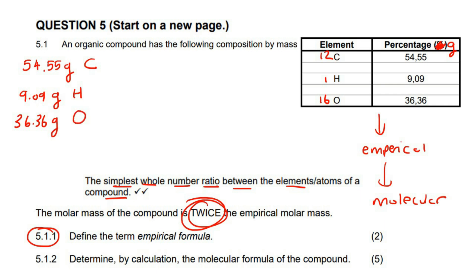The next step is to convert each of those into moles by using the n equals m over capital M formula. And so for carbon, that would be 54.55 over 12. For hydrogen, that would be 9.09 over 1, and for oxygen, that would be 36.36 over 16.